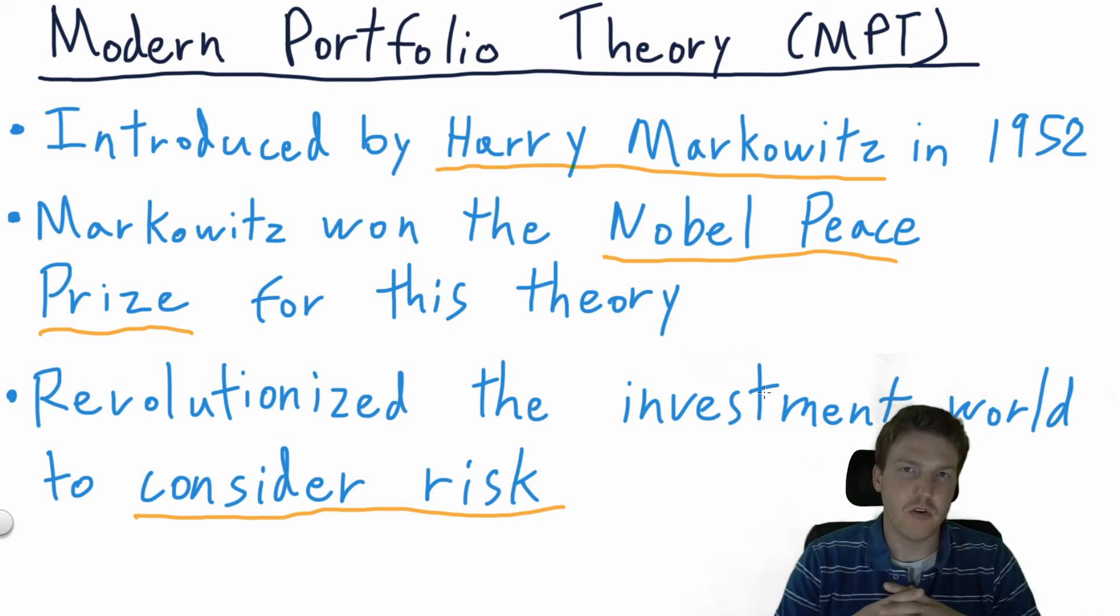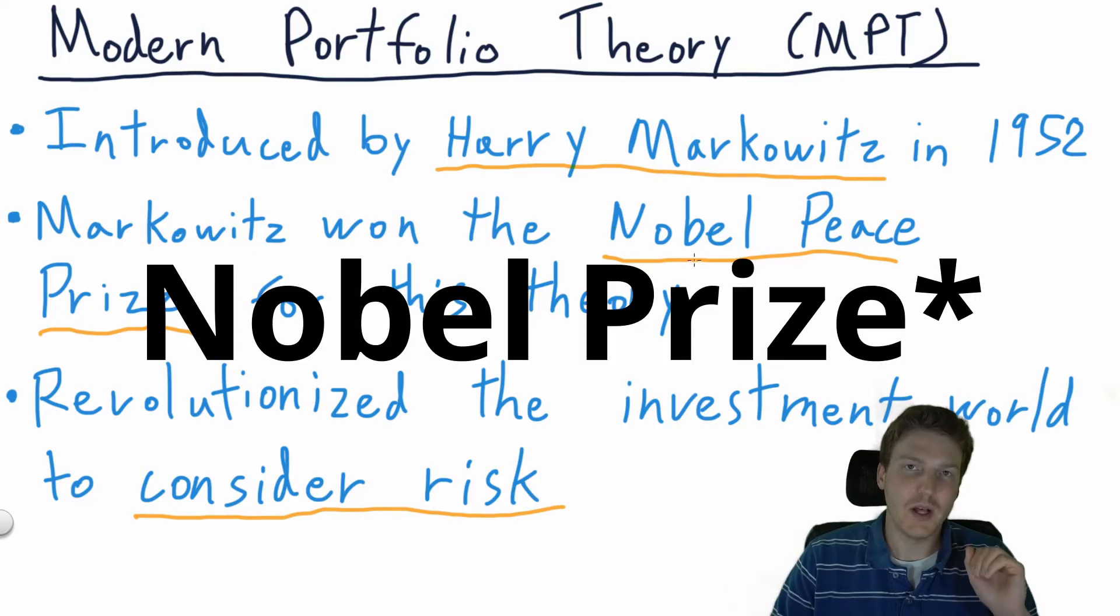The Modern Portfolio Theory was introduced by the economist Harry Markowitz in an essay in 1952. This theory went on to win Markowitz the Nobel Peace Prize.